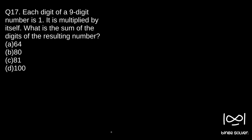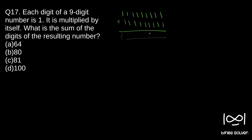Question 17: Each digit of a nine-digit number is one. It is multiplied by itself. What is the sum of the digits of the resulting number? So we have 123456789 multiplied by 123456789, and we have to sum the digits of the result.